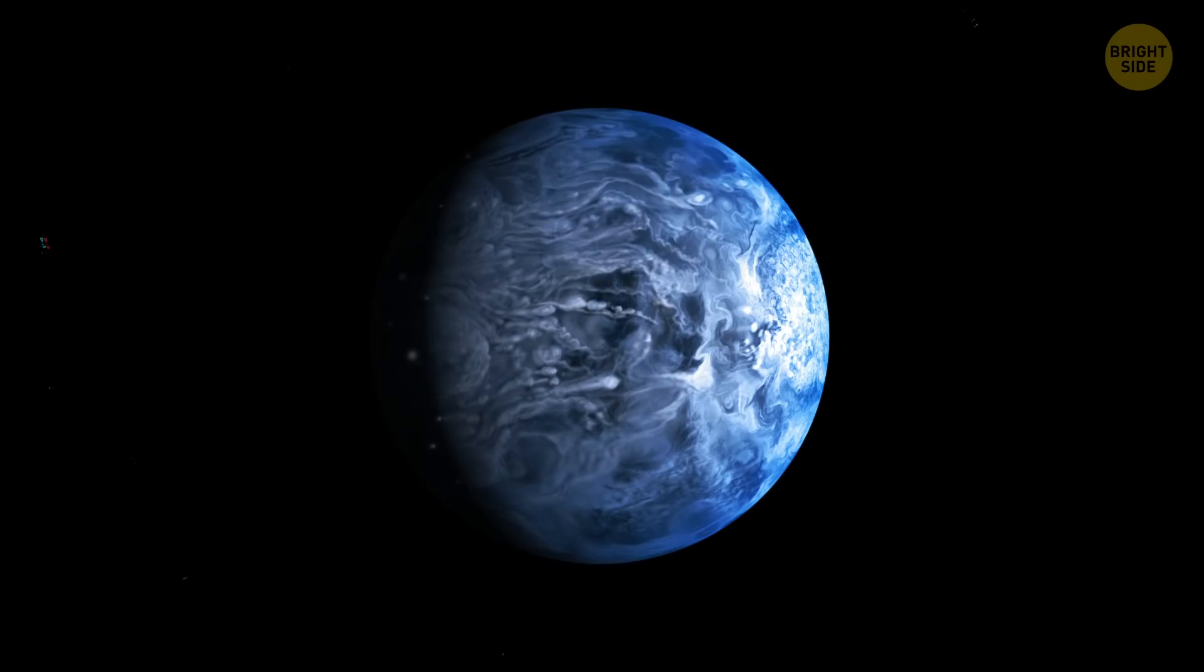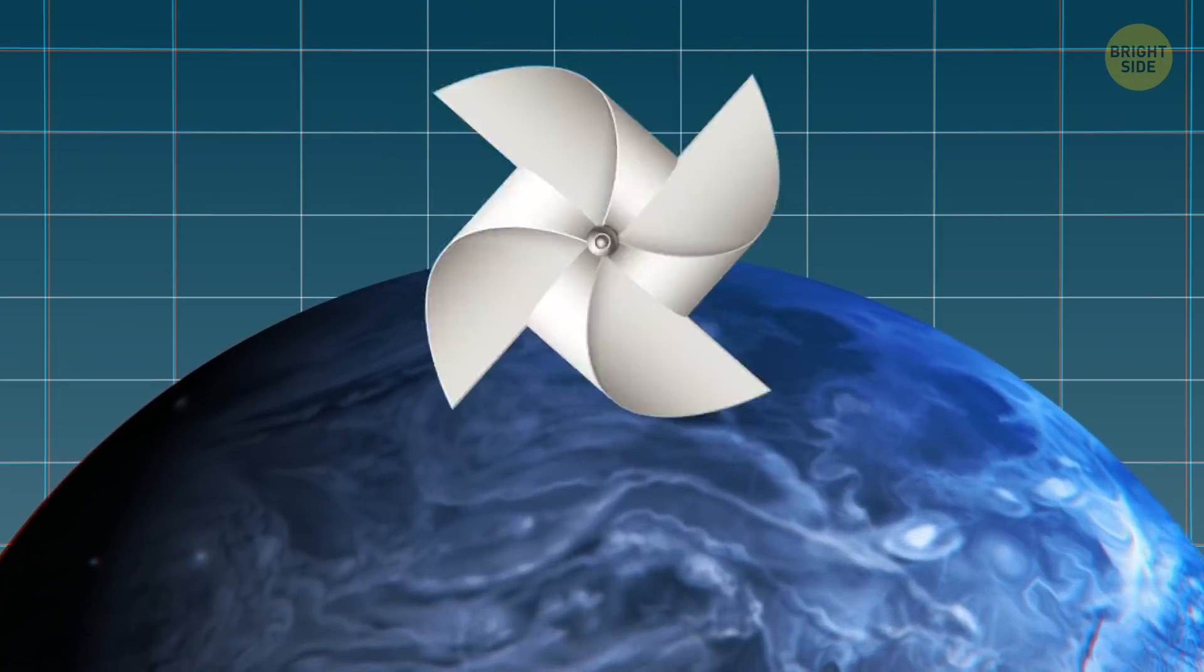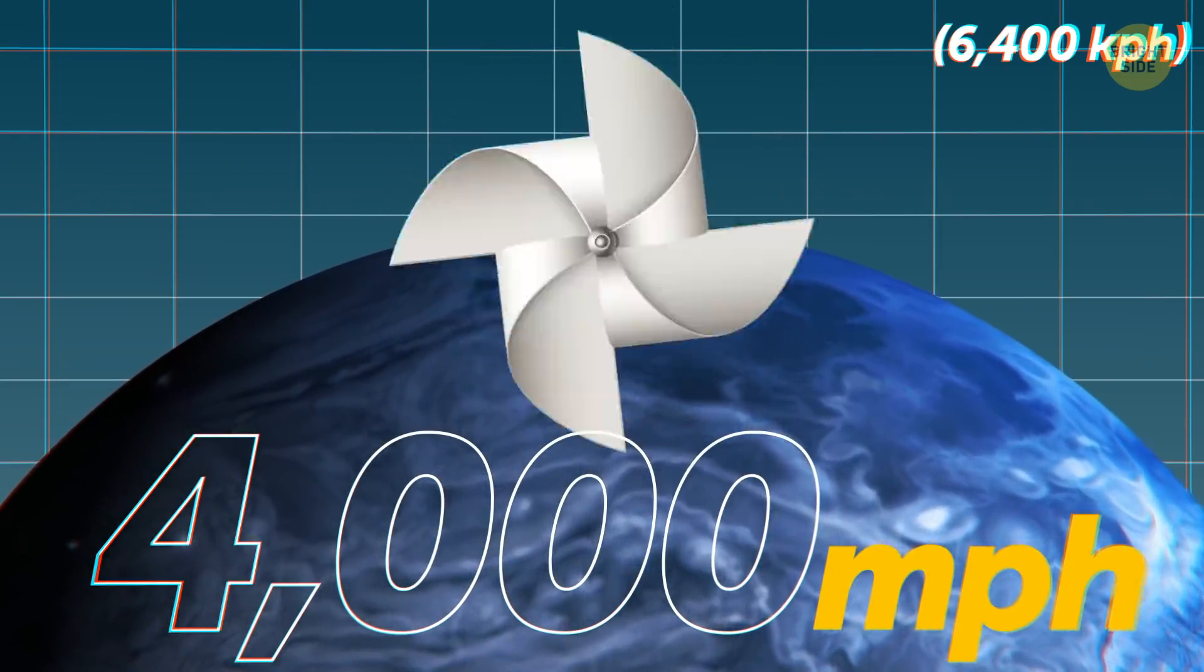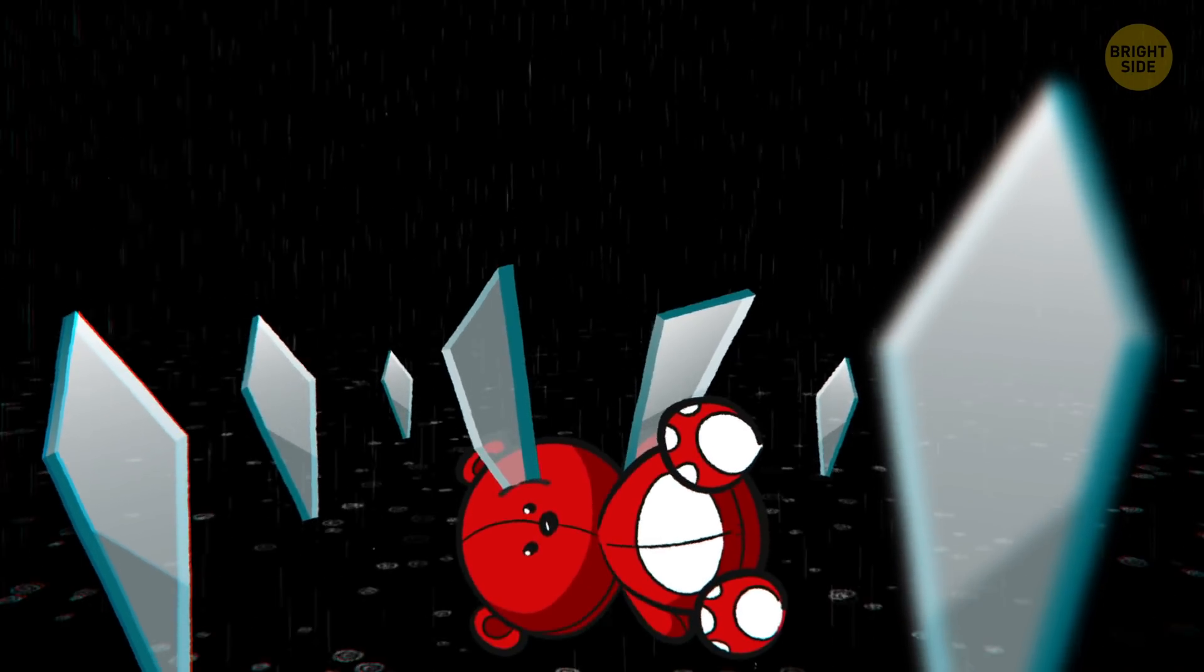Same problem with building wind power stations on the planet HD 189733B. Great energy potential in winds blowing at 4,000 miles per hour, Chicago to New York in about 12 minutes. But it rains glass there, so best to just stay away from this one.